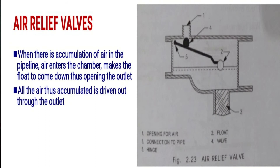When there is accumulation of air in the pipeline, air enters the chamber and makes the float to come down, thus opening the outlet. The accumulated air is driven out through the outlet.